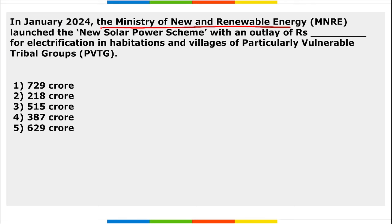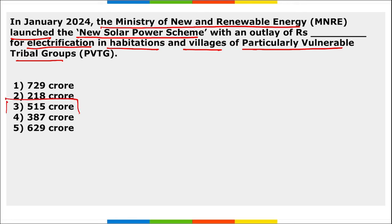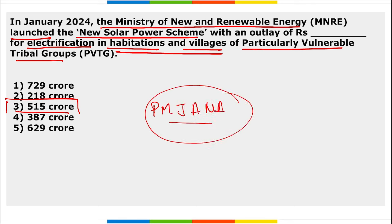The Ministry of New and Renewable Energy launched a new solar power scheme with an outlay of 515 crore rupees for electrification in habitations and villages of Particularly Vulnerable Tribal Groups (PVTGs). The scheme was launched under the Pradhan Mantri Janjati Adivasi Nyaya Maha Abhiyan (PM-JANMAN) program, for the tenure from FY24 to FY26.